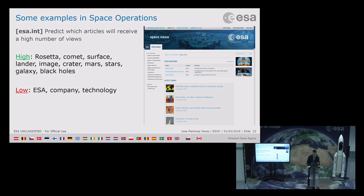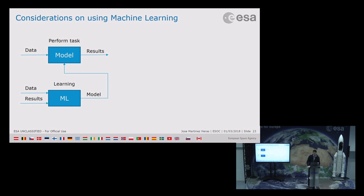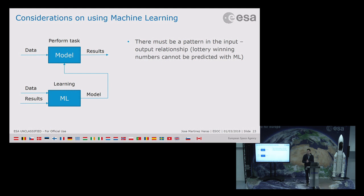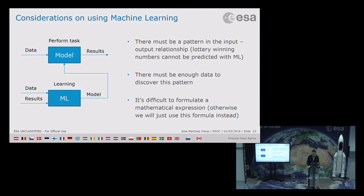Some considerations when using machine learning. First, there must be a pattern between the data and the results — if there is no pattern, there is nothing to find, so no lottery winning. Second, the amount of data should be enough to discover the pattern relative to the complexity of the model. Third, it must be difficult to formulate the relationship with a formula — because if it were easy, we would just use the formula.